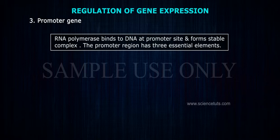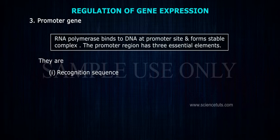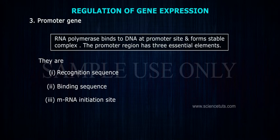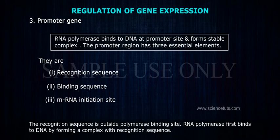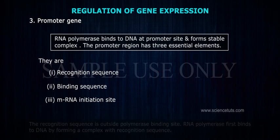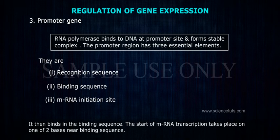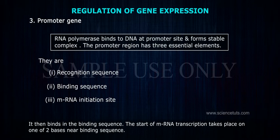The promoter region has three essential elements. The recognition sequence is outside the polymerase binding site. RNA polymerase first binds to DNA by forming a complex with the recognition sequence, and it then binds in the binding sequence. The start of mRNA transcription takes place on one of two bases near the binding sequence.